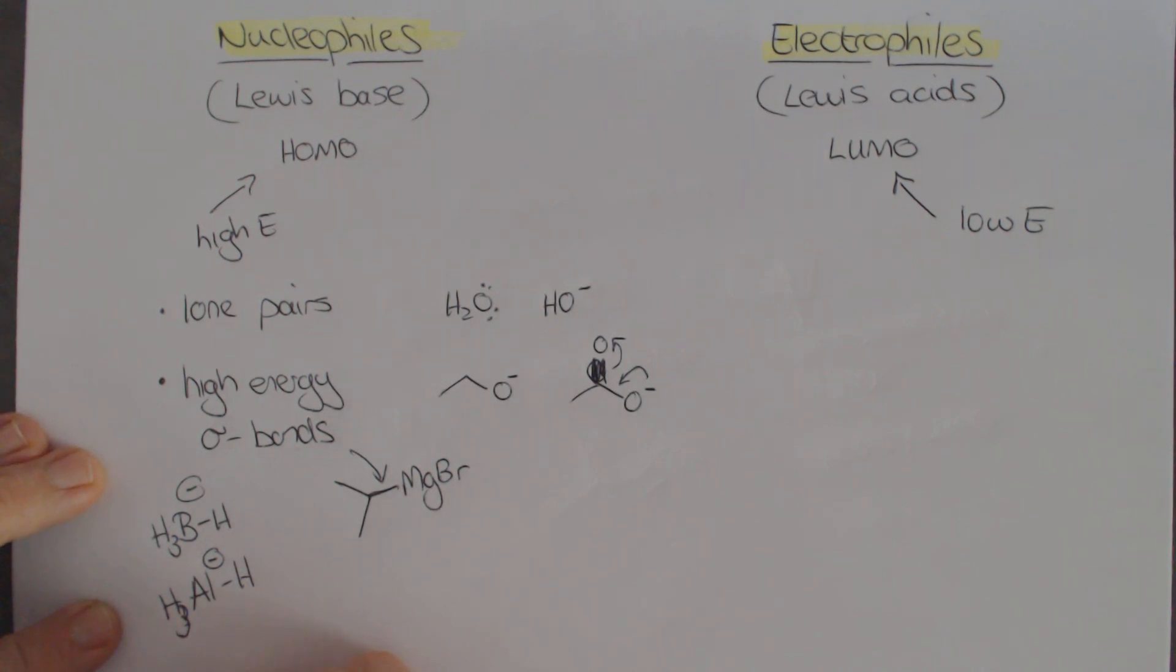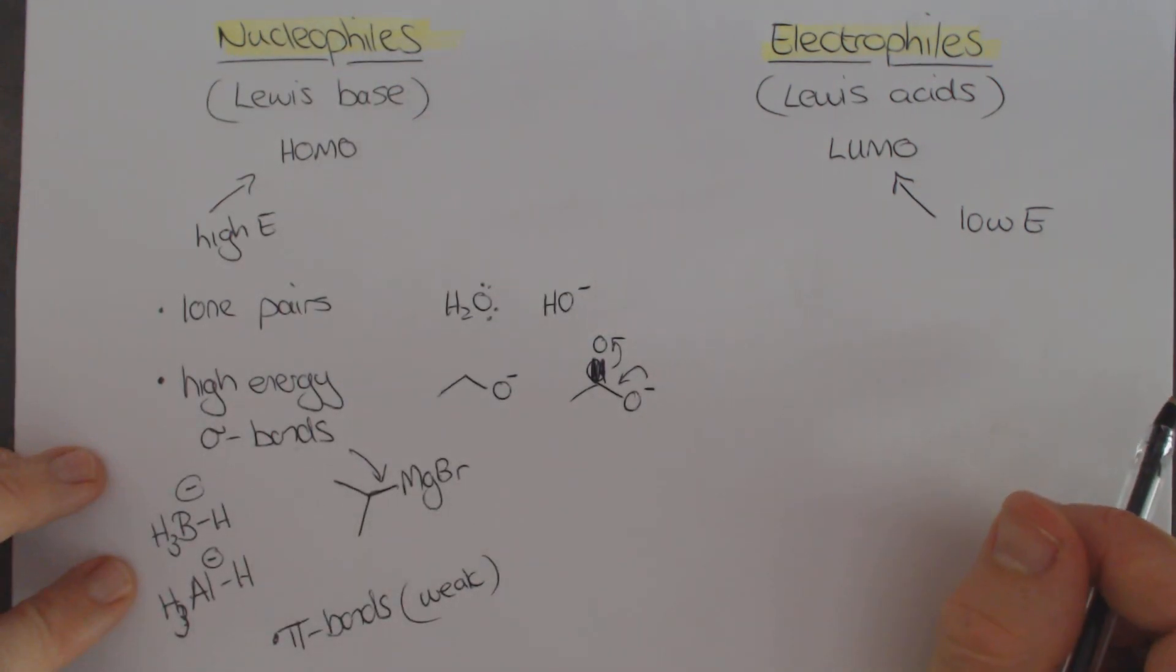And the last one, just getting a bit of a mention, is pi bonds. Pi bonds can be nucleophilic sometimes in molecules, but they're actually very weak. These are not fantastic nucleophiles, but they can be nucleophilic, we do see examples of it. We just need to be aware of it when we're looking out for things that are nucleophilic.